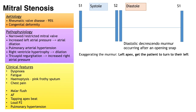On auscultation you will hear a diastolic decrescendo murmur occurring after an opening snap — the sound of the stiff non-compliant valves opening. You may also hear a loud P2 component to S2, a sign of pulmonary hypertension. Listen to the lung bases for pulmonary oedema. Here is a sound clip of mitral stenosis.